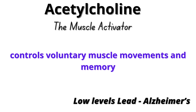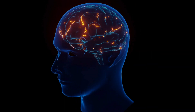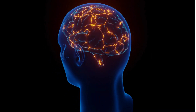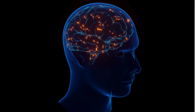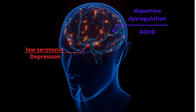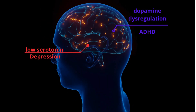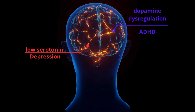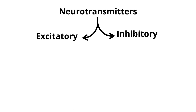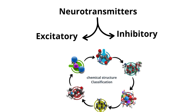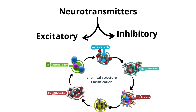Acetylcholine, the muscle activator, controls voluntary muscle movements and memory, and is affected in diseases like Alzheimer's. Understanding neurotransmitters helps us grasp how mental health disorders, neurodegenerative diseases, and even simple emotions arise. For example, depression is linked to low serotonin levels, while ADHD is often associated with dopamine dysregulation.